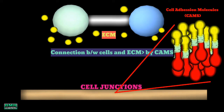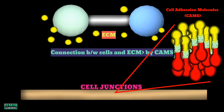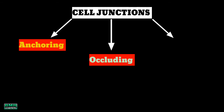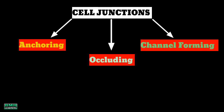In this video we will cover only the types of cell junctions. Next videos will feature each junction with its function, structure, and properties separately. There are mainly three types of cell junctions: the first is anchoring junctions, the second is occluding junctions, and the third is channel-forming junctions.